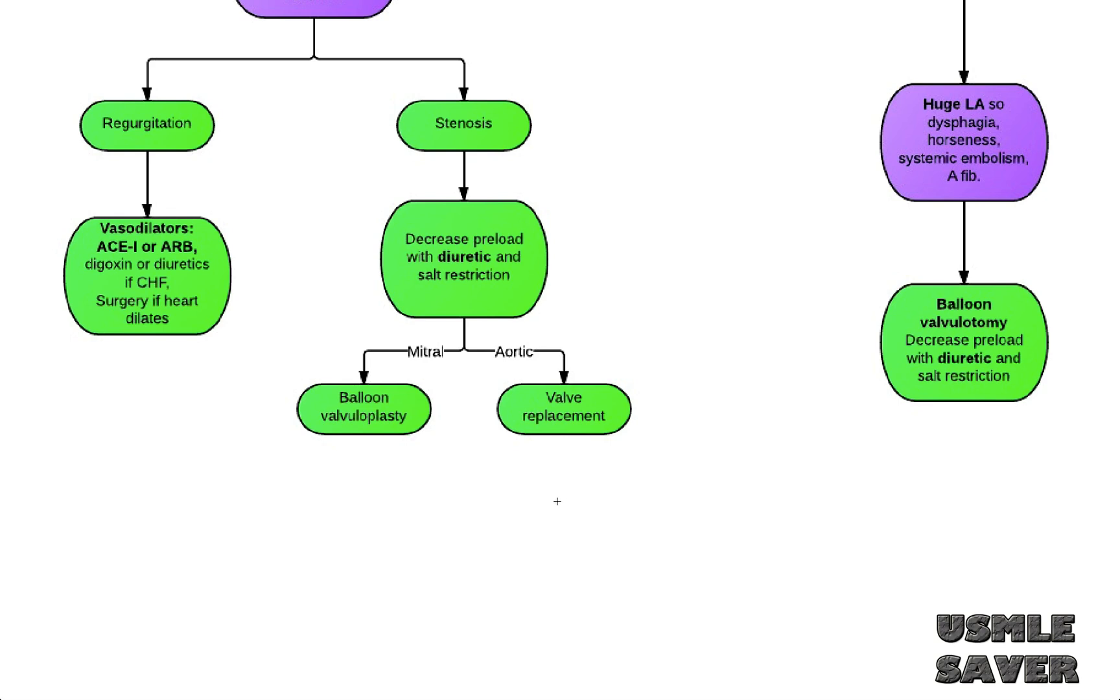Trick is knowing the location for each murmur. For example, aortic murmurs are best heard at right sternal border of second intercostal space. Pulmonary murmurs are best heard at left sternal border of second intercostal space. Tricuspid murmurs are best heard at the left sternal border of fifth intercostal space. And mitral murmurs are best heard at mid-clavicular line of fifth intercostal space. Again, one more time.